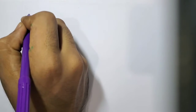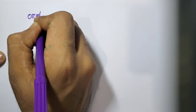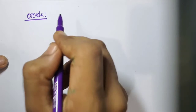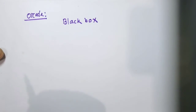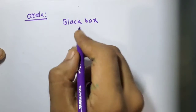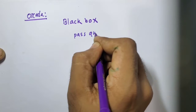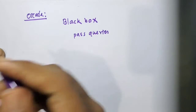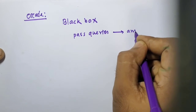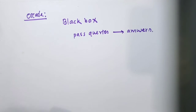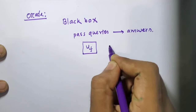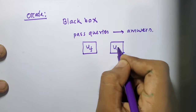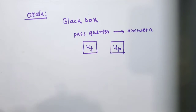Let us see what an oracle is before we start with the Grover algorithm. An oracle is a black box that we cannot look inside, to which we can pass queries and get answers. These are mainly oracles and black boxes — they are physical devices. In Grover's algorithm, we have two oracles mainly used, which we will discuss later on.